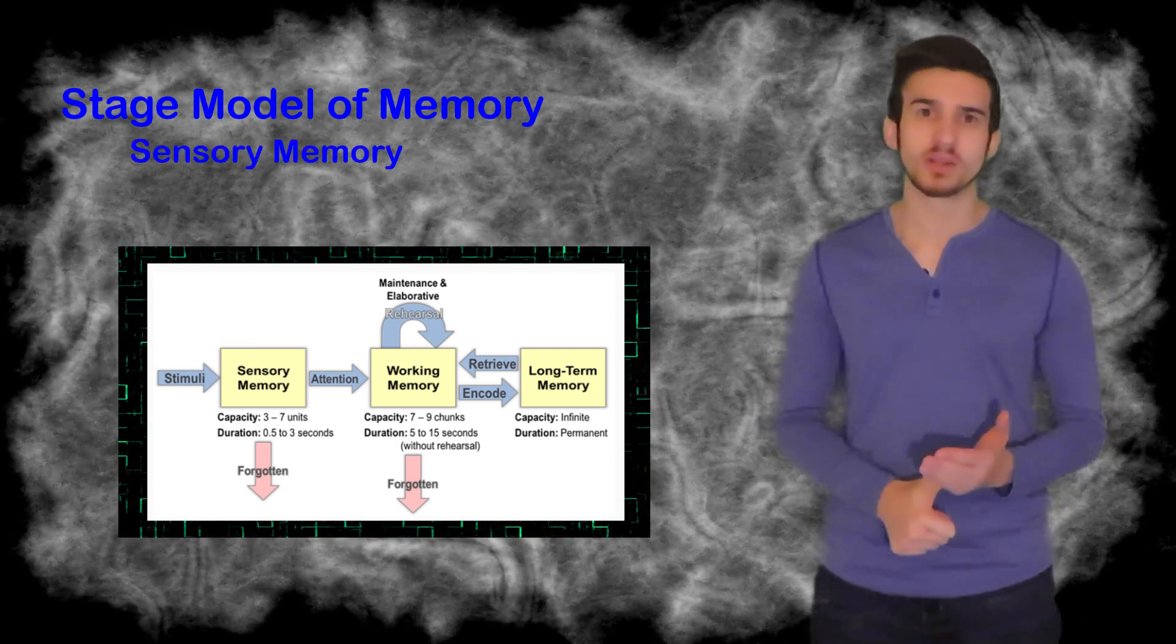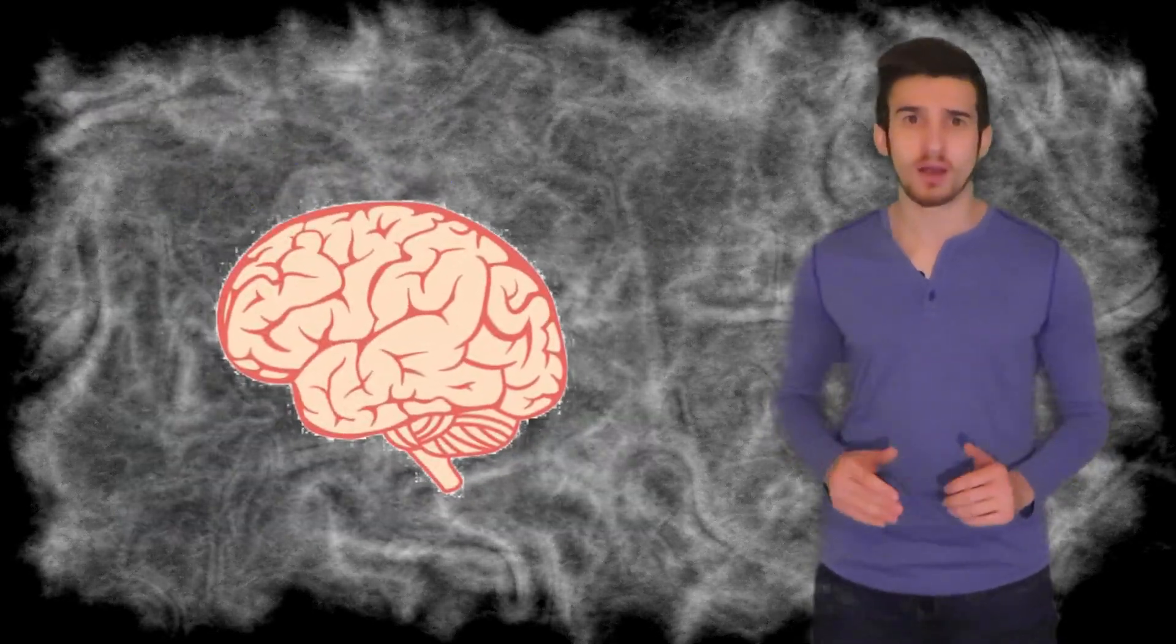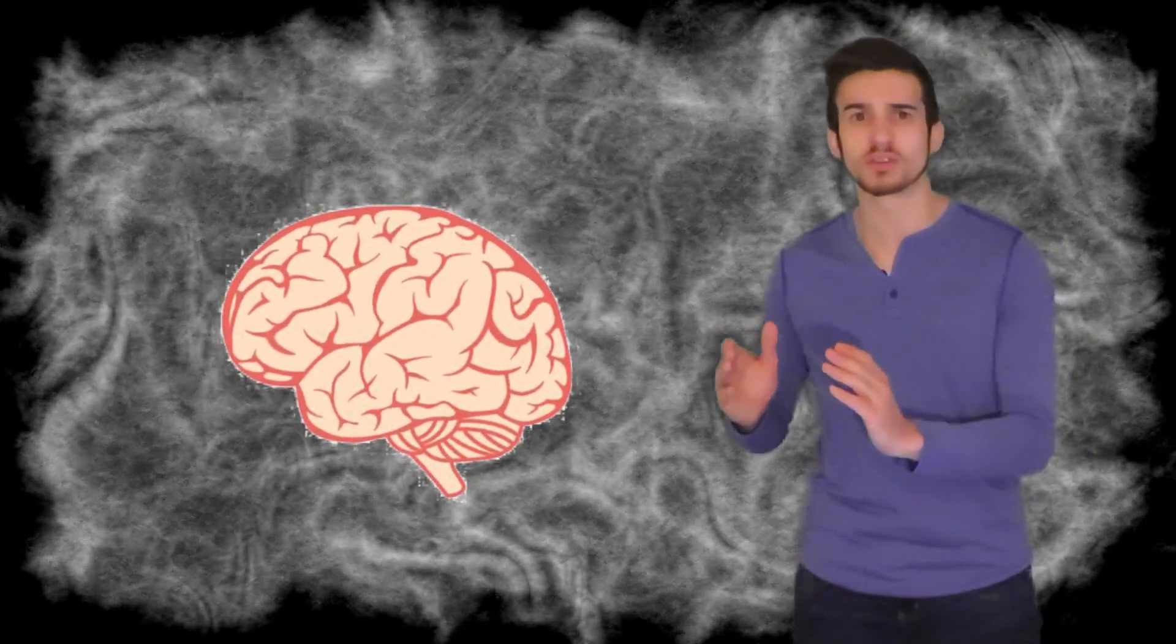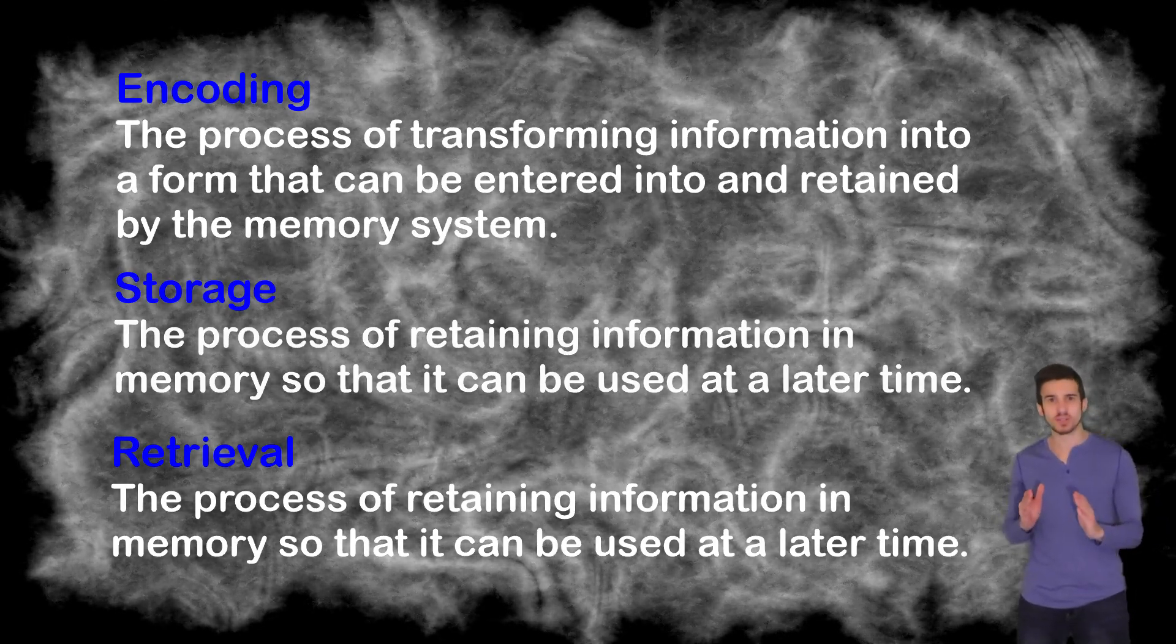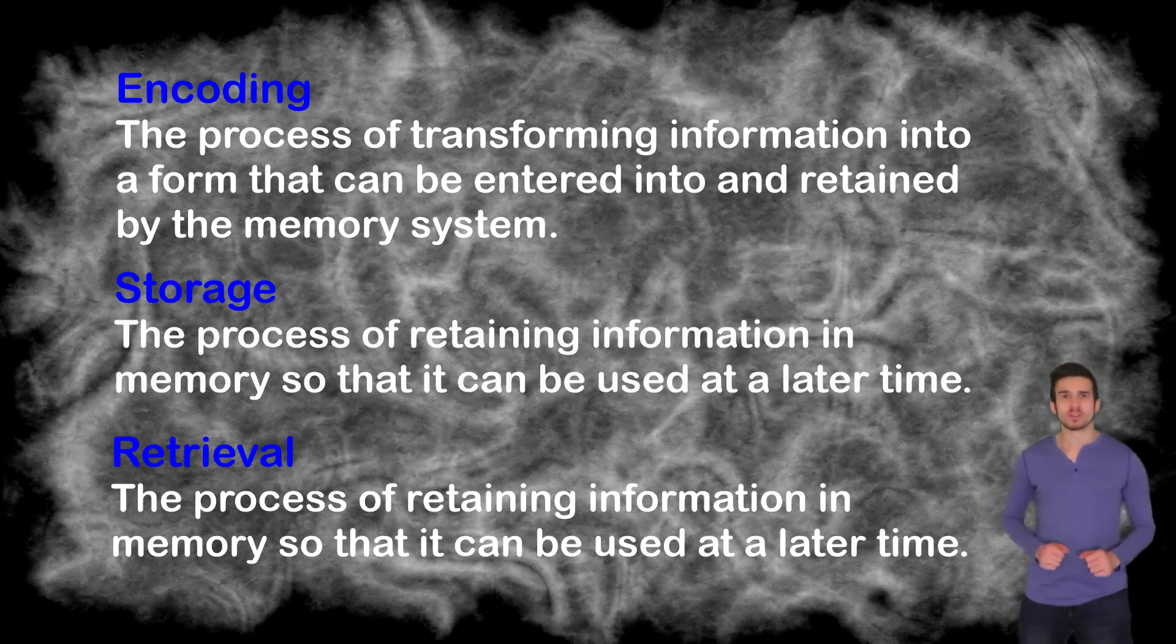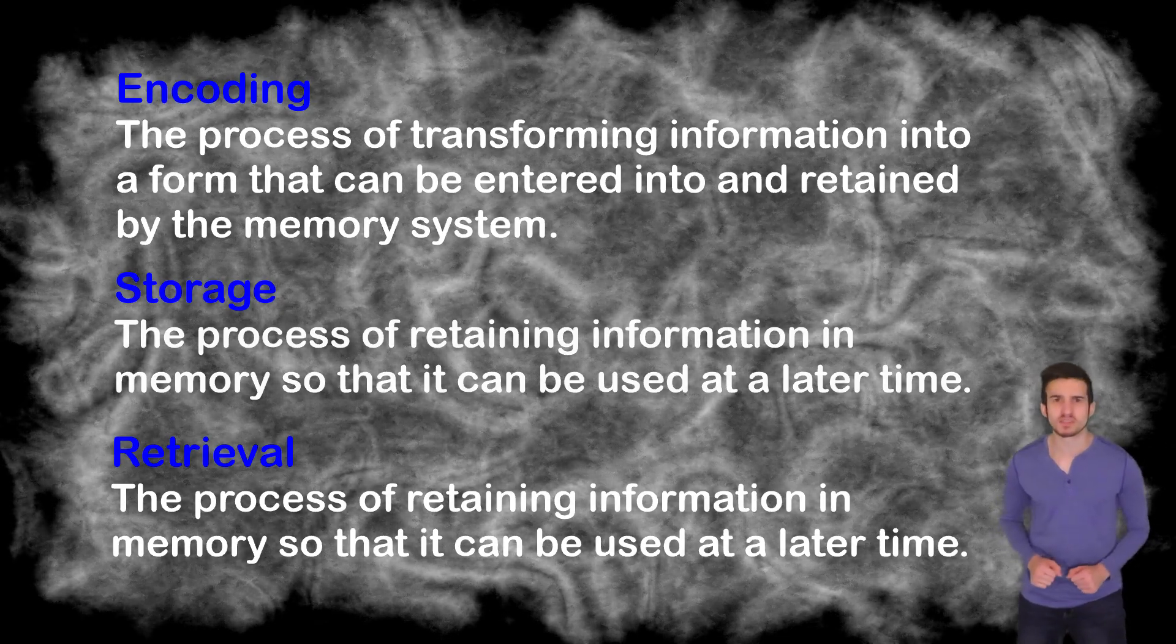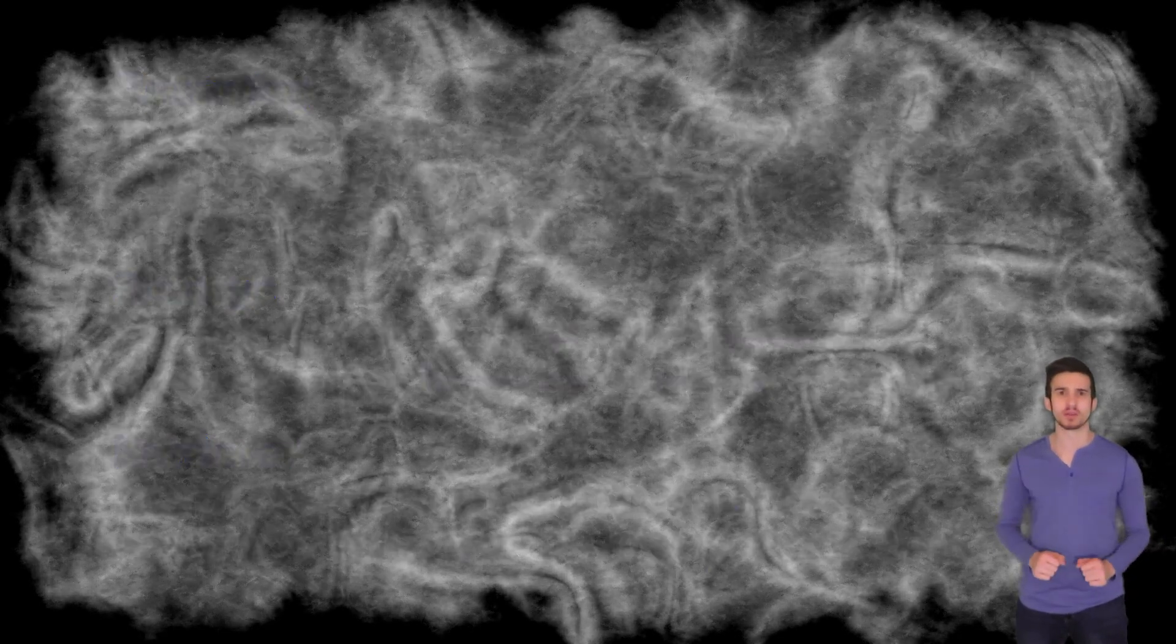In this model, memory is going to be characterized into three distinct stages. We're going to have our sensory memory, our short-term memory, and our long-term memory. Before we get started talking about these three distinct stages of memory, it is important to understand a few basic processes of how our memory works. Encoding is going to be the process of transforming information into a form entered and retained by the memory systems. Storage is going to be our ability to retain information in our memory so it can be used at a later time. Retrieval is going to be us simply retrieving information from our memory so that we can become consciously aware of it.